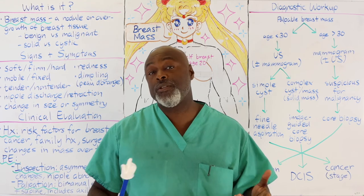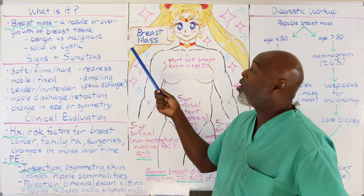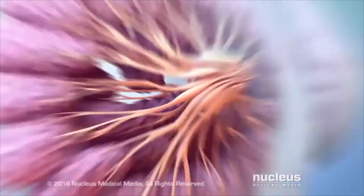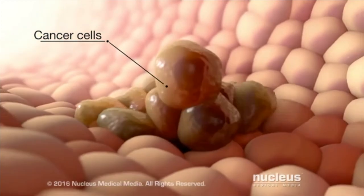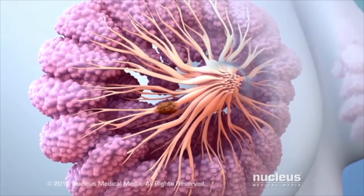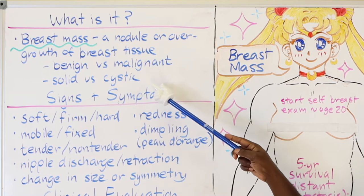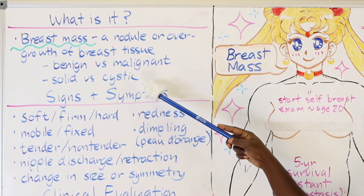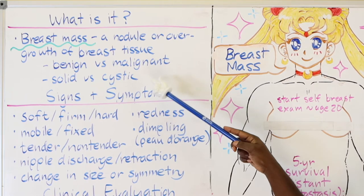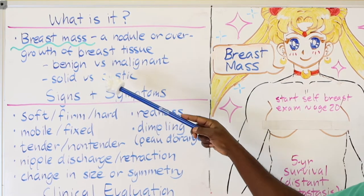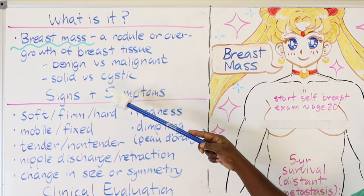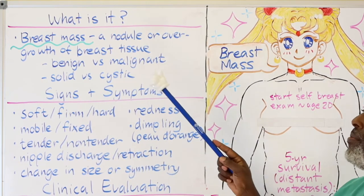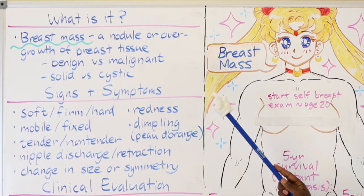First things first — what is a breast mass? A breast mass is a nodule or overgrowth of breast tissue. These can be benign, such as a fibroadenoma, or malignant like an invasive ductal carcinoma, which is the most common type. They can be solid like a cancer or fibroadenoma, or cystic like a benign cystic lesion or lactocele. Breasts normally have cysts from time to time, and it's not always abnormal. The whole thing about breast disease is figuring out whether something is likely to be benign or malignant and going from there.